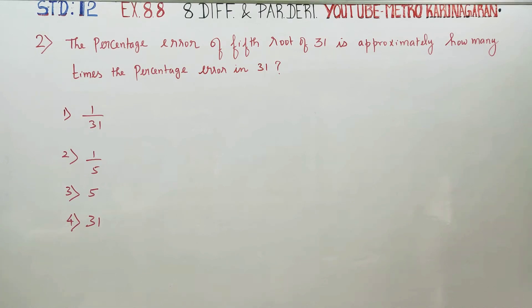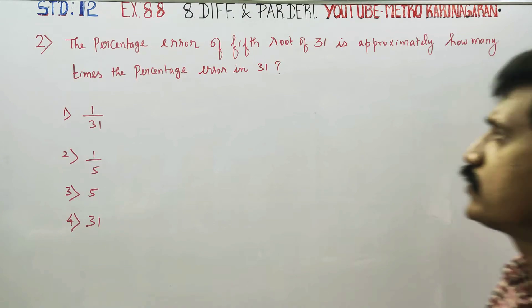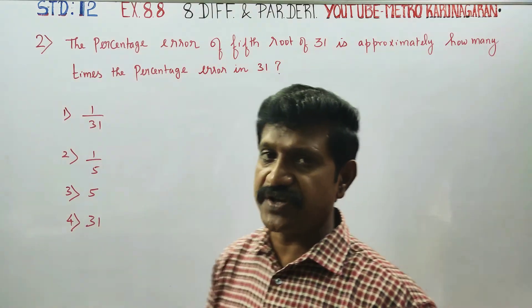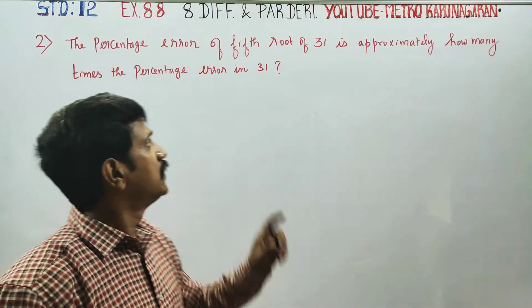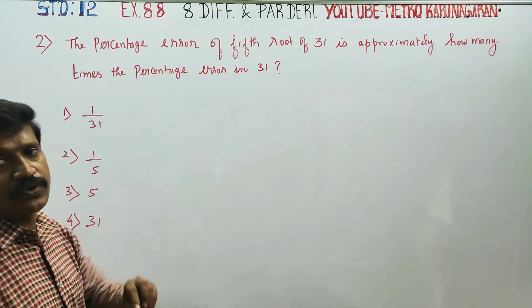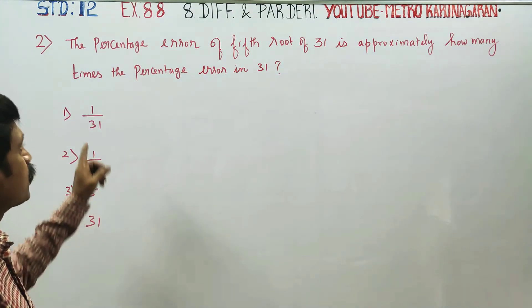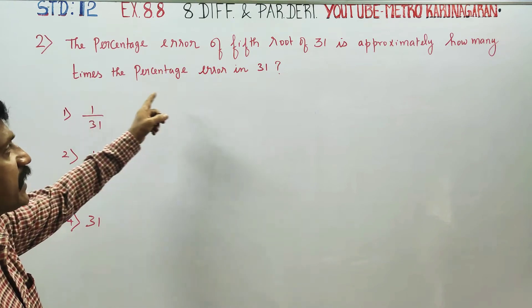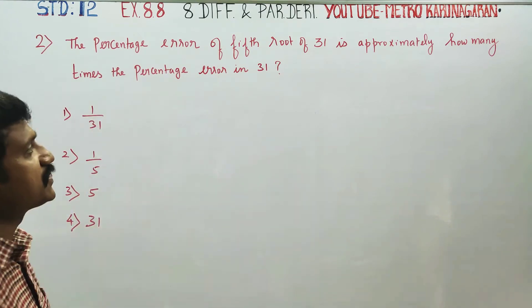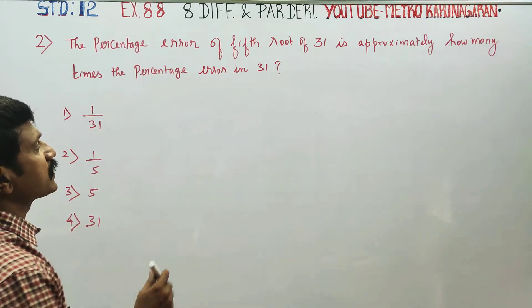Dear 12th standard students, I am Etru Kuranagaran. In exercise number 8.8, sum number 2: the percentage error of the 5th root of 31 is approximately how many times the percentage error in 31?